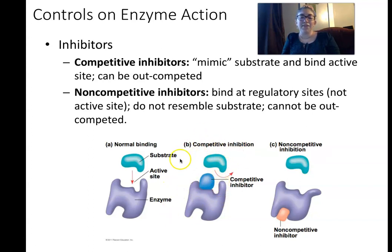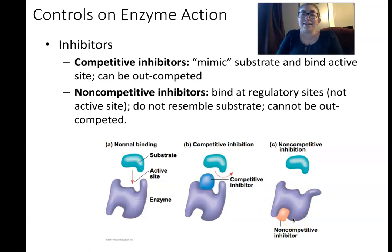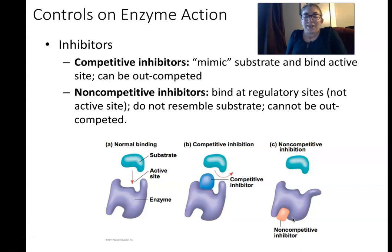If you want to inhibit an enzyme, add a lot of inhibitor. To reverse inhibition, add more substrate. A non-competitive inhibitor, though, binds to a different site on the enzyme — not the active site. In doing so, it causes the enzyme to change shape so the active site can no longer fit the substrate. As the name suggests, it's non-competitive: no amount of additional substrate will displace that inhibitor.